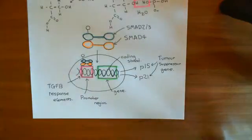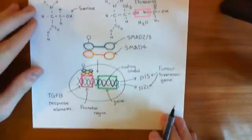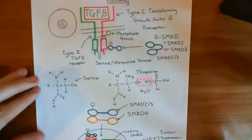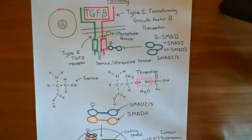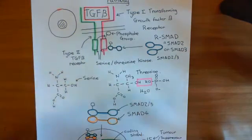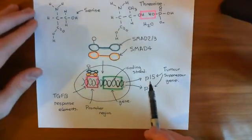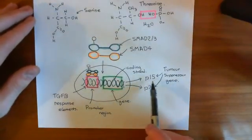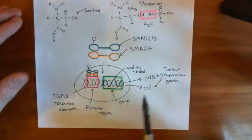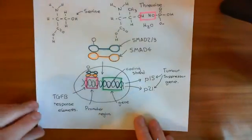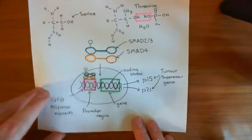Okay, so in the previous video, what we saw was that if you expose a cell to transforming growth factor beta, or TGF-beta, it's going to activate a signaling pathway that leads to that cell expressing increased levels of the tumor suppressor genes P15 and P21. What we now want to see is how exactly do those tumor suppressor proteins work.